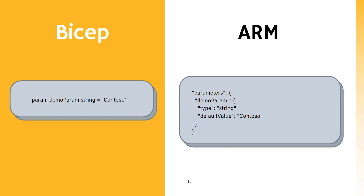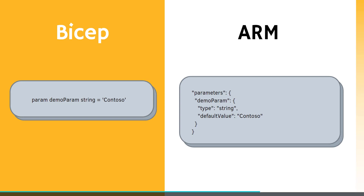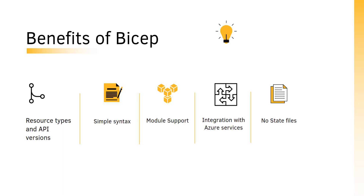Let's look at some advantages of Azure Bicep. With Azure Bicep you have support for the same variety of Azure resources as ARM templates, but with less effort. It also supports various API versions for the same resource — for example, when creating a storage account, you can use multiple versions of the storage API. That kind of support is not available with tools like Terraform, which is a key difference.